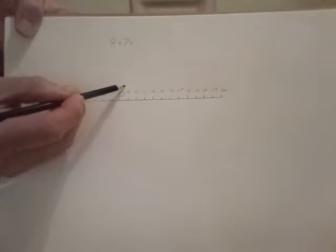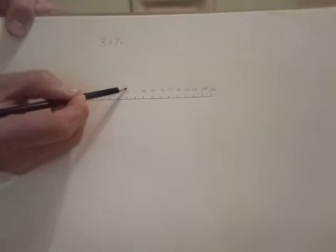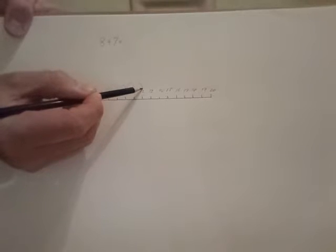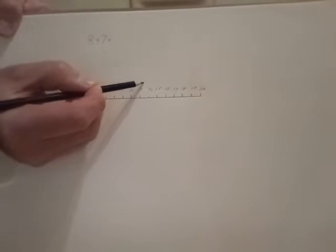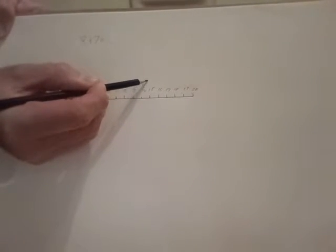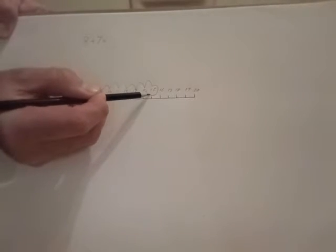Don't count the 8. 1, 2, 3, 4, 5, 6, 7. We can circle the number we land on. We find that we land on a 15.